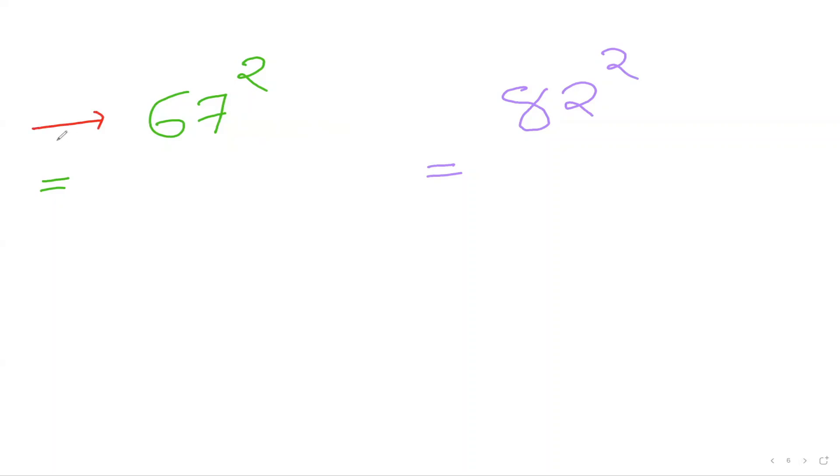Let us see if I want to find out 67 square. So I'll be looking at the first digit here, 6. 6 square is 36. I'll put down 36. 7 square. Then I'm going to put down 49 here.